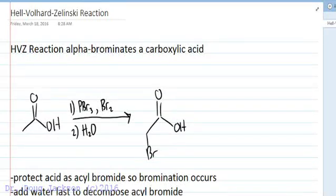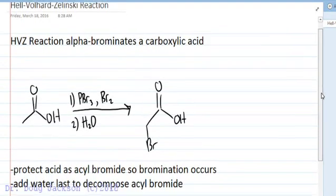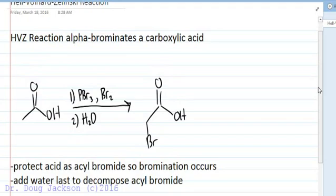The HVZ reaction is a reaction for alpha bromination of a carboxylic acid. The reason we use these reagents and the reason why this is different from normal bromination of a ketone is because we must protect the acid as an acyl bromide first. Otherwise bromination will not occur. We also have to wait till the very end to add water or we'll decompose our protected carboxylic acid first.